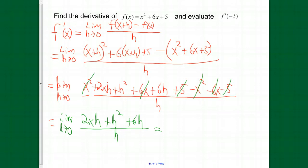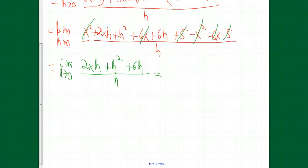If we try to take the limit, we're still getting 0 over 0. So, common factor of h in all three terms in the numerator. Factor that out. It will cancel out with the factor of h in the denominator, so we get 2x plus h plus 6. Now, you take the limit as h approaches 0, and what we get is 2x plus 6.